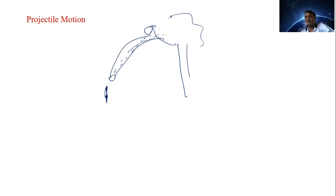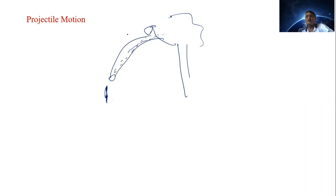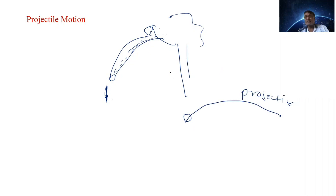You have thrown the object — not vertically upward, but at some angle other than 90 degrees. This motion is called projectile motion. A cricket ball hit by the bat follows this path; it is also projectile motion. Suppose you are in a plane and throw some object — it follows the path like this. That is also projectile motion.